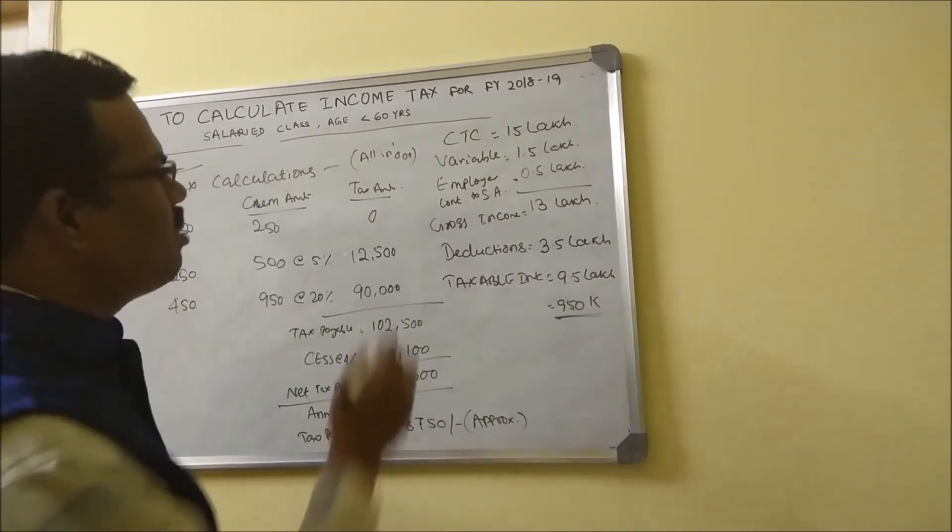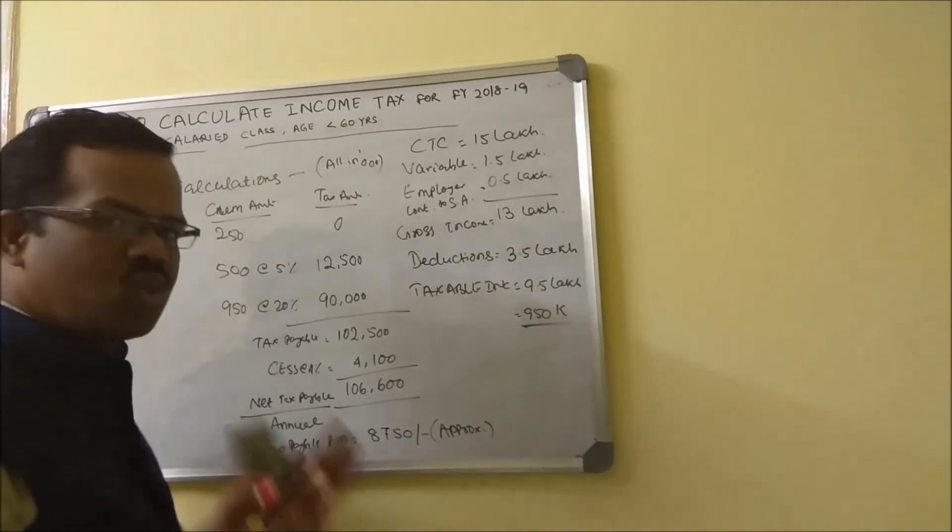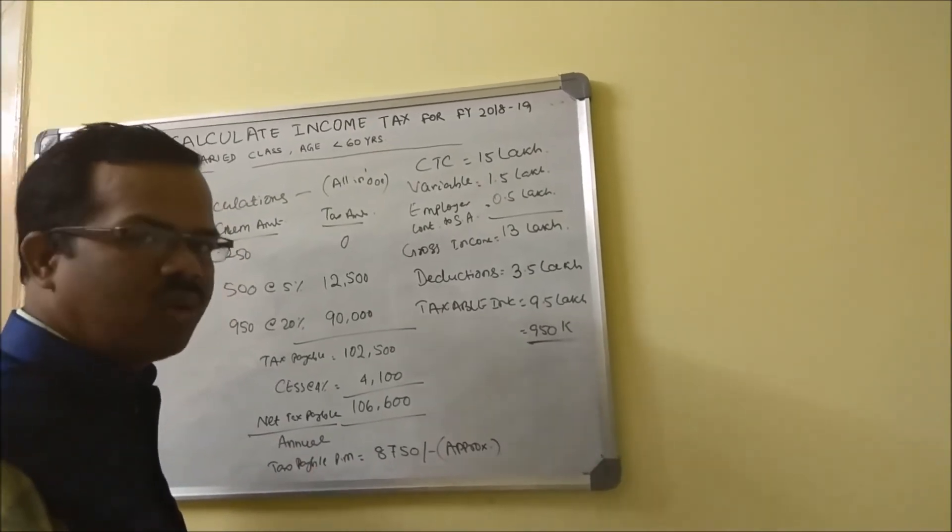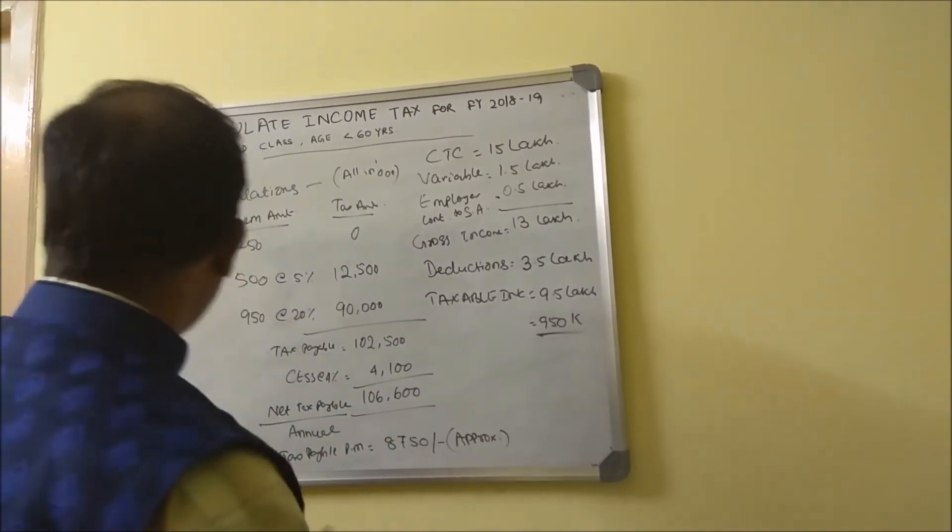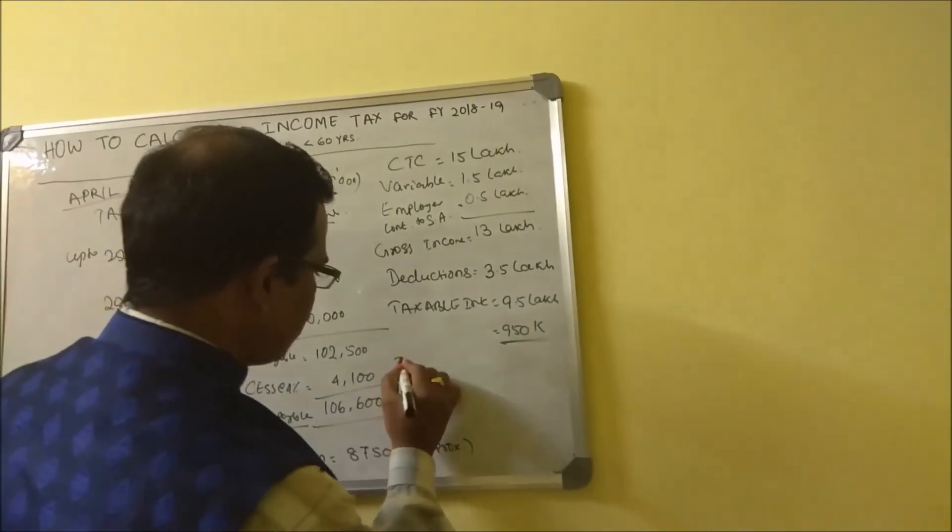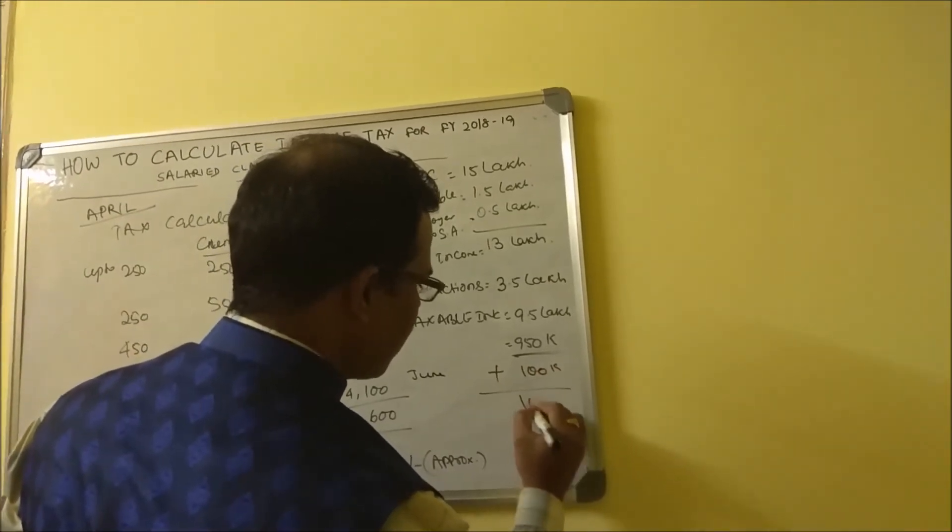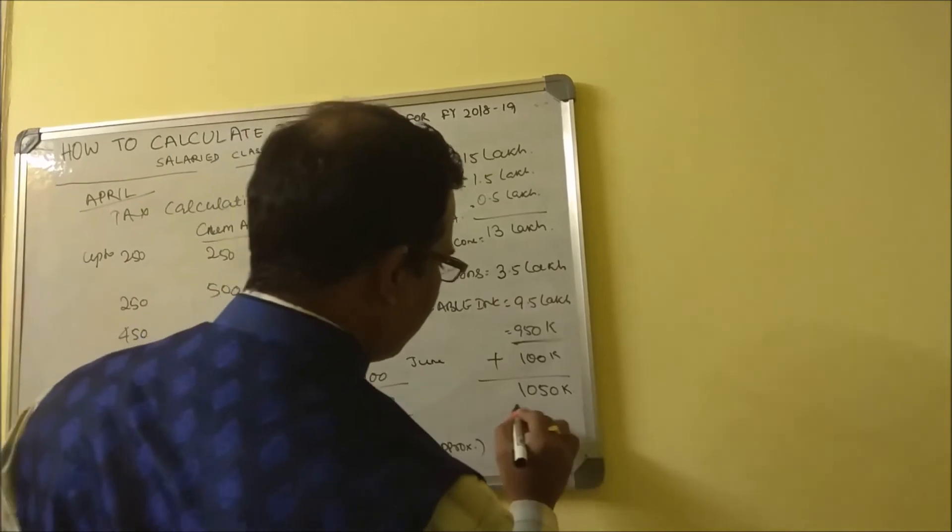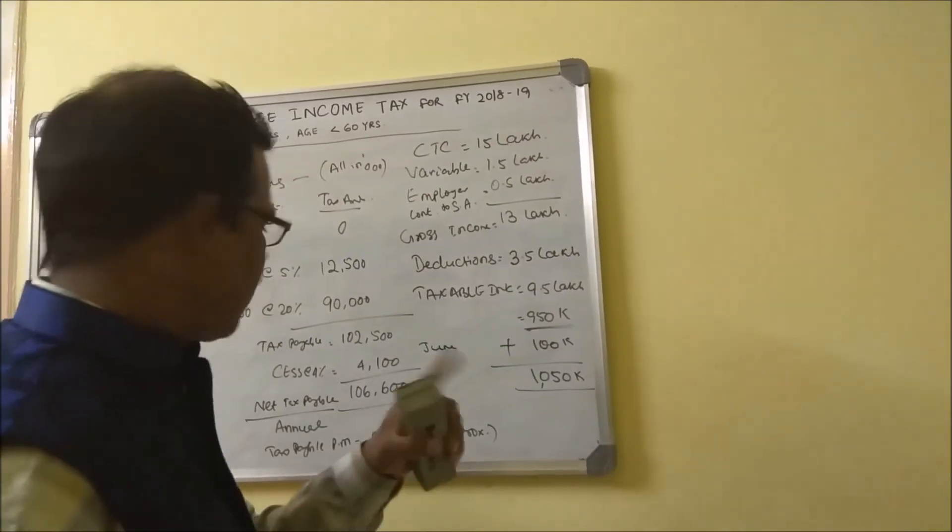Now in between you will get the variable. Let's say you have the variable of 1.5 lakh your employer has given you. In the June month you are going to get a variable amount of one lakh - it can go beyond, it can go to 1.5 or some companies give you beyond that, but let us conservatively assume you are getting one lakh in the month of June. The moment you get one lakh in the month of June, that becomes 100k, which takes your gross income, your taxable income, to 10.5 lakh. You are now beyond 10 lakh of taxable income bracket.